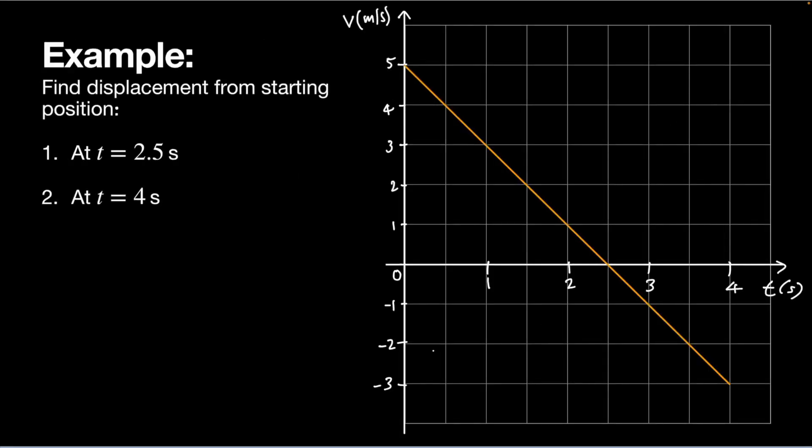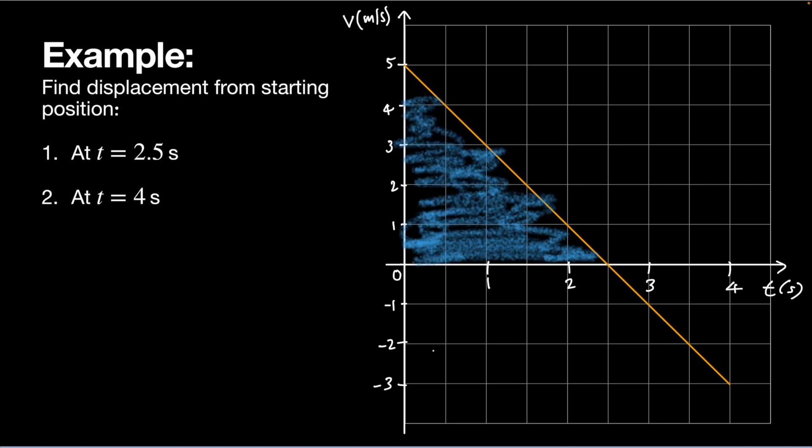Here's another example. Let's do a quick example where we want to find the displacement from the starting position at two different points in time. We want to find the displacement from the starting position at 2.5 seconds. 2.5 is just here, so it's going to be this area here. I only want to go as far as that.